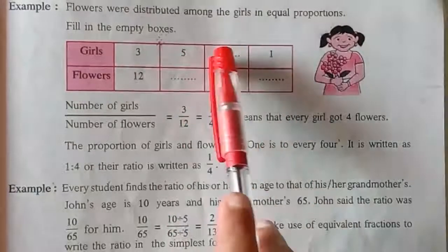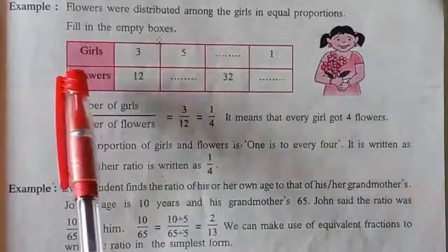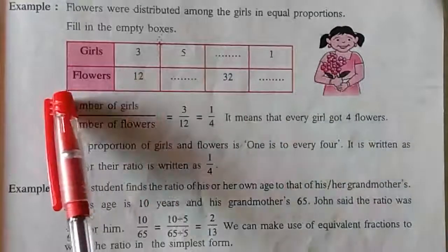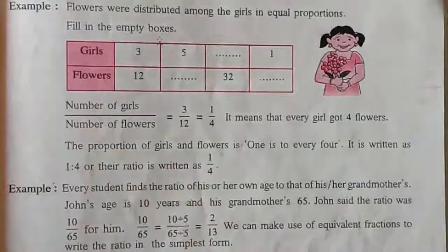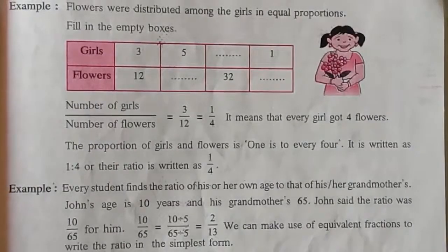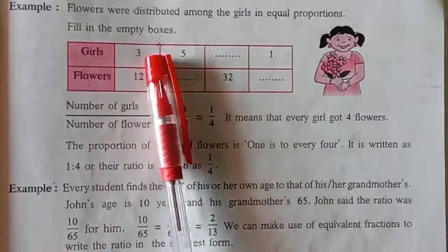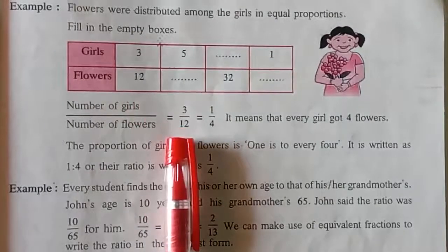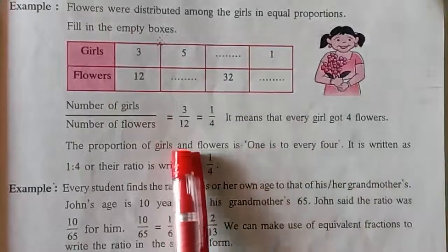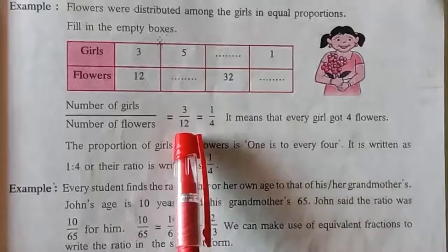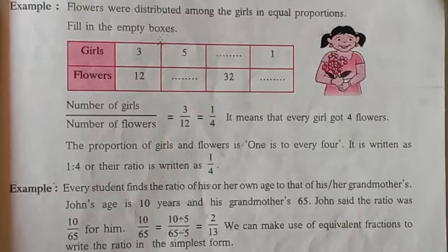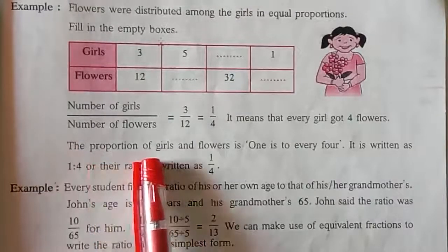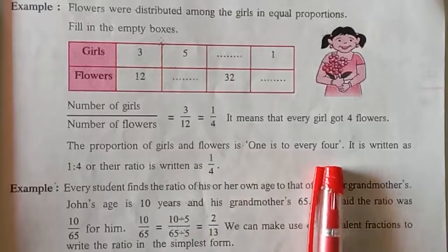Next example: flowers were distributed among the girls in equal proportions — fill in the empty boxes. The number of girls and number of flowers are given. The ratio is taken as number of girls upon number of flowers. In the first row, the number of girls is 3 and the number of flowers is 12. So we take 3 upon 12. Both come in the 3 times table: 3 ones are 1, and 3 fours are 12. So the answer is 1 upon 4 — every girl got 4 flowers. The proportion of girls and flowers is 1 is to 4, or ratio 1 upon 4.